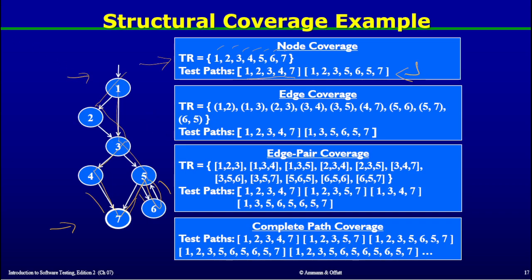To achieve edge coverage, we must cover edges: (1,2), (1,3), (2,3), (3,4), (3,5), (4,7), (5,6), (5,7), and (6,5). Looking at the test paths given: (1,2,3,4,7) and (1,3,5,6,5,7) — these satisfy edge coverage. You can also see that the test paths for edge coverage cover all nodes one through seven, demonstrating that edge coverage subsumes node coverage in this example.